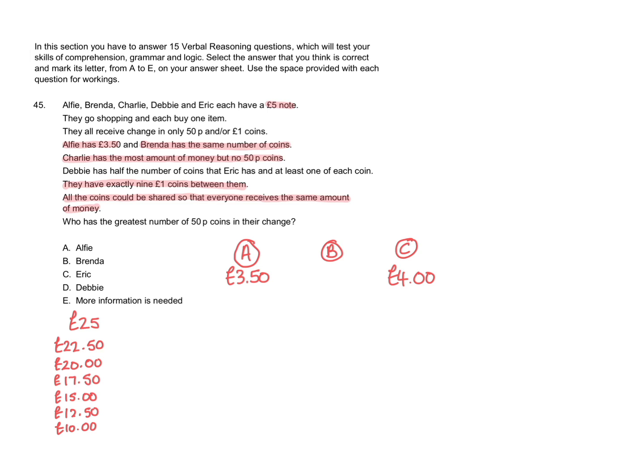Next we're told about Debbie. Debbie has half the number of coins that Eric has and at least one of each coin. So if we think about Debbie, Debbie must have first of all at least one £1 coin and one 50p coin which means of course that Eric would have double the number of coins but we don't know what those coins are at this stage.